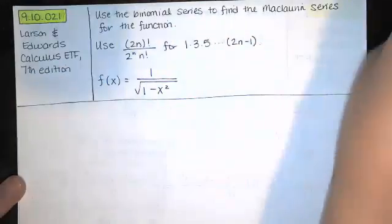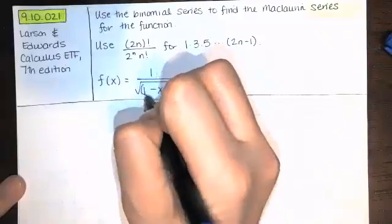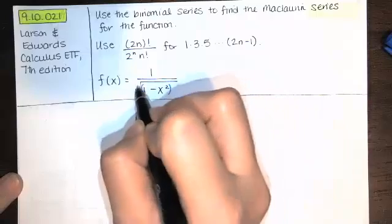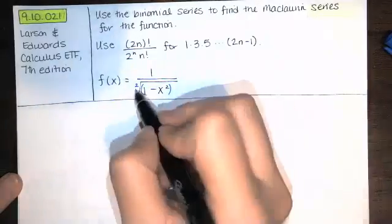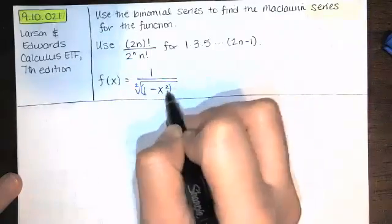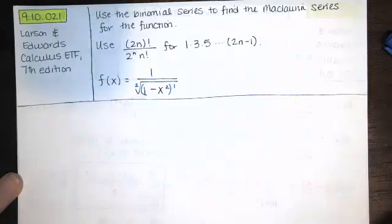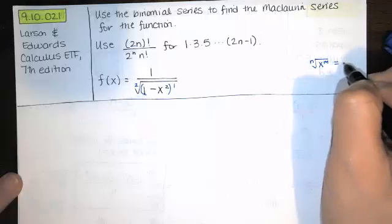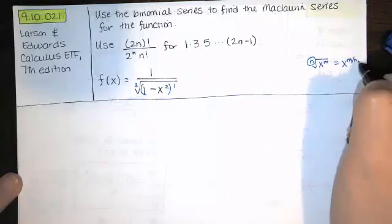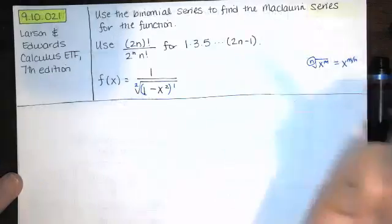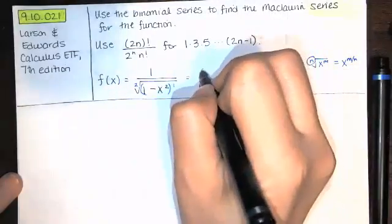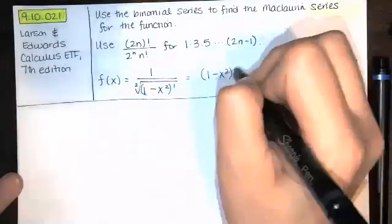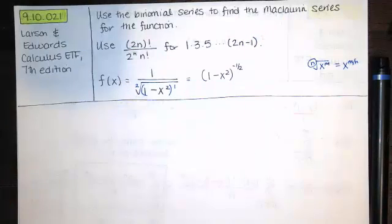You can think of this as a binomial expression raised to a certain power. Whenever we have a square root, we can think of that as an implied index of 2, and we can think of all of this as being raised to the first. Using the property from algebra that the nth root of x to the m is x to the m over n, this is actually 1 minus x squared raised to the 1/2 power, but it's in the denominator. So if we bring that up to the numerator, that's a negative 1/2 power.